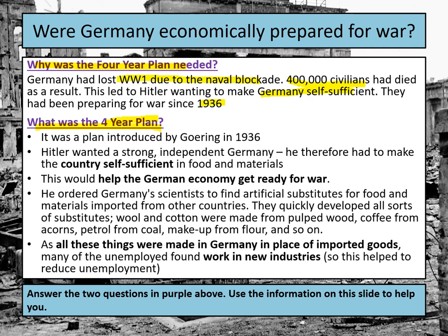So, what was the Four-Year Plan? It was about getting Germany to be self-sufficient in terms of food but also materials — they didn't want to rely on imports from any other nation. Hitler put Goering in charge of this plan, which began in 1936. It's all about getting the German economy ready for war, going alongside Hitler building up his army from 100,000 in 1933 to 1.4 million by 1939.